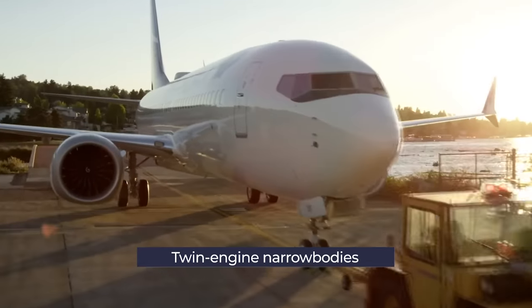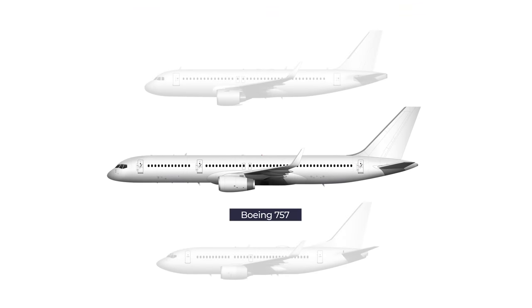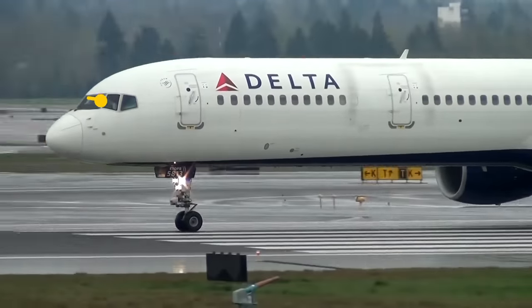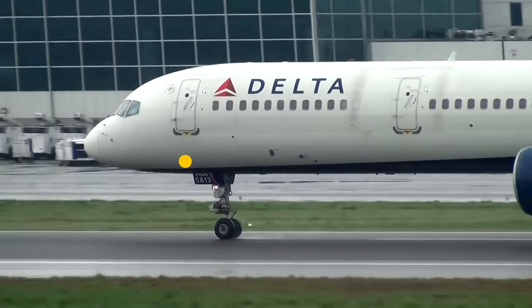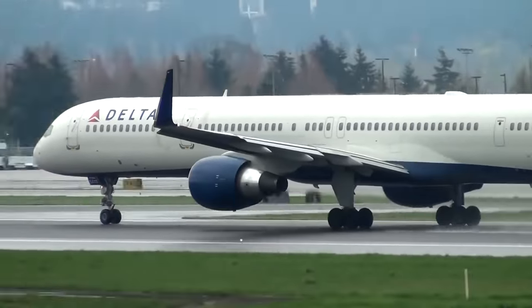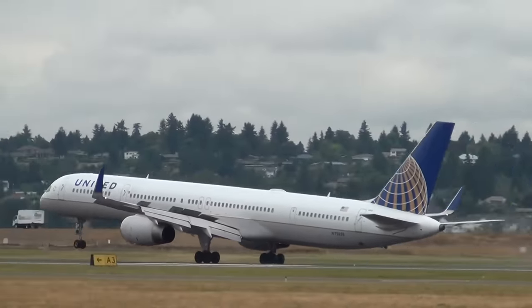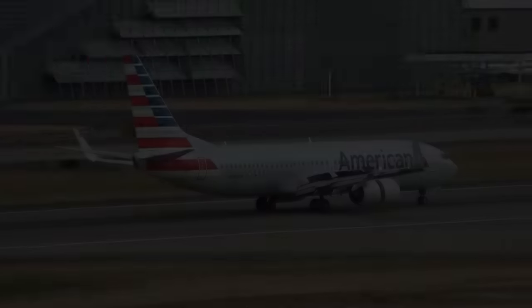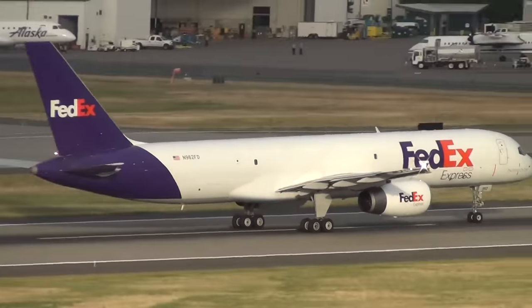Moving on to twin-engine narrowbodies — to distinguish the 757 narrowbody from the 737 or A320 family, look for Boeing-style cockpit windows, a distinctive dolphin nose, and a taller landing gear than the 737 or A320. It also lacks the triangular section between the tail and the fuselage seen on the Boeing 737. Some 757s have a tall blended winglet, but not all, making it an unreliable differentiator.